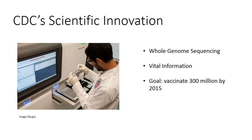This vital information will help lab scientists predict how likely emerging strains are to cause epidemics and be more effective at preventing them at an early stage. Also, the meningitis vaccine project had a goal to vaccinate 300 million people by 2015.